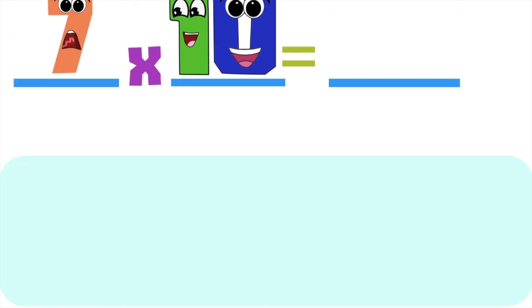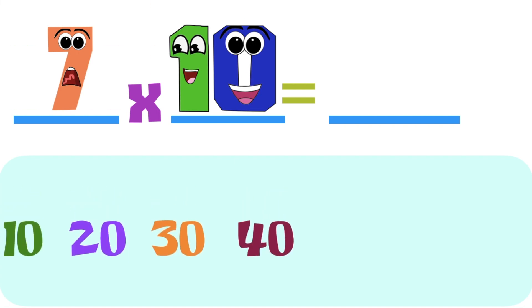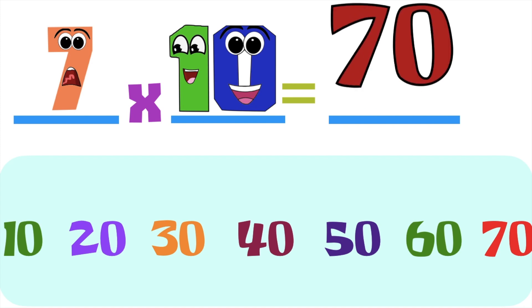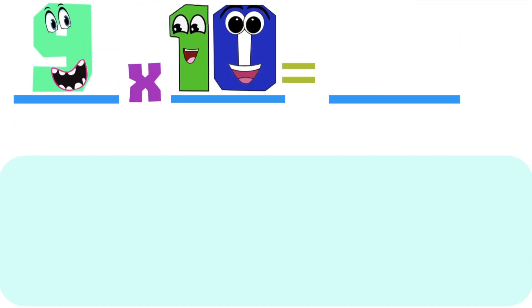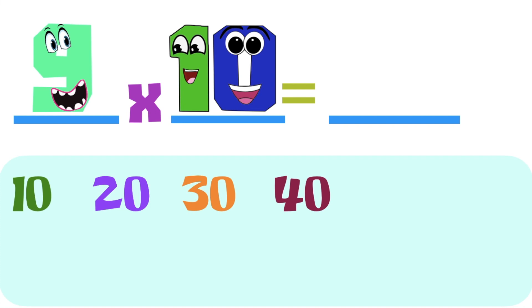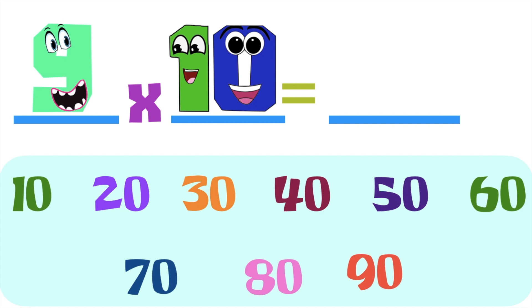How about 7 times 10 is equal to blank? Let's skip count by 10 until we reach the seventh multiple: 10, 20, 30, 40, 50, 60, 70. So, 7 times 10 is equal to 70. How about 9 times 10 is equal to blank? What is the product? Let's skip count by 10 until we reach the ninth multiple: 10, 20, 30, 40, 50, 60, 70, 80, 90. So, 9 times 10 is equal to 90.